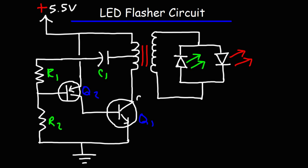For those of you who may not know, this is the collector of the NPN transistor, this is the base, and that is the emitter. For the PNP transistor, this is the base, that's the collector, and that's the emitter.